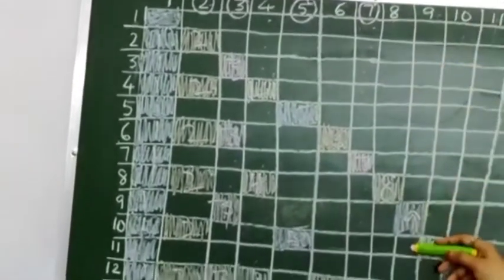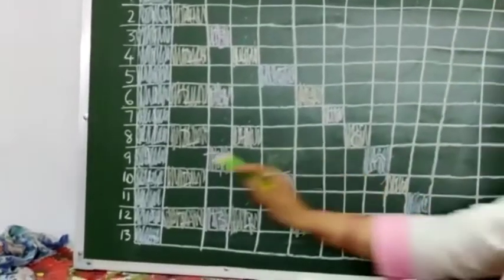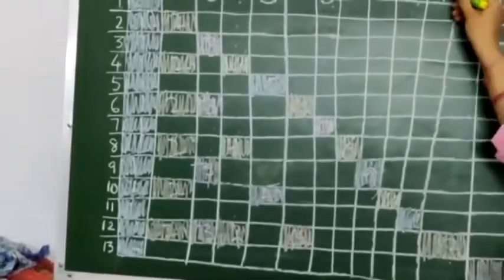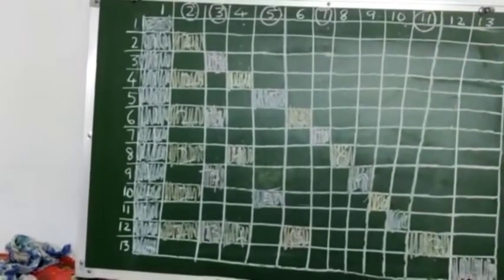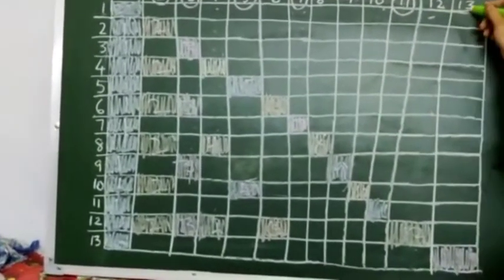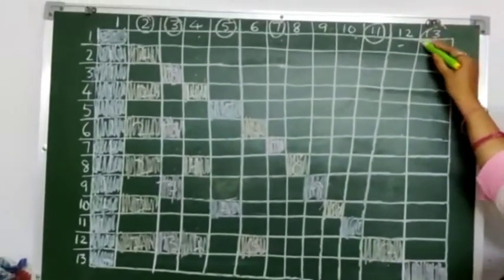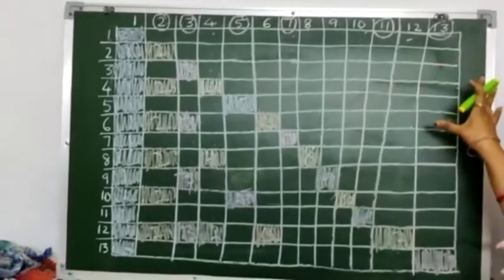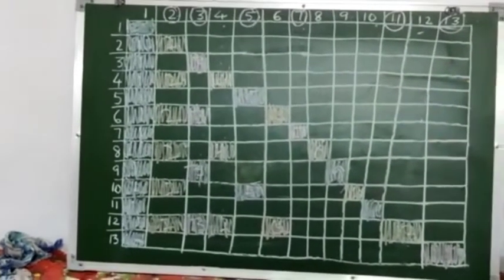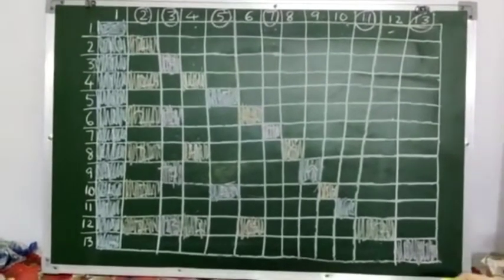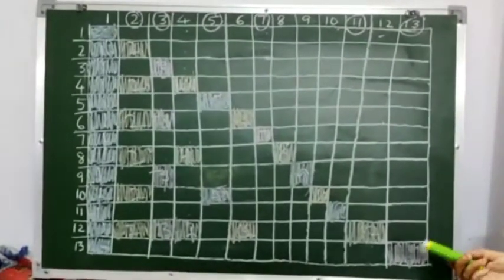Eight is not a prime number. Nine is not a prime number. Ten is not a prime number. But eleven — yes — one and eleven, only two factors, so eleven is again a prime number. Twelve is not a prime number. Thirteen — again — one and thirteen. So with this we can find out the prime numbers. With this grid we are able to get factors, multiples, and we can also find the prime numbers.